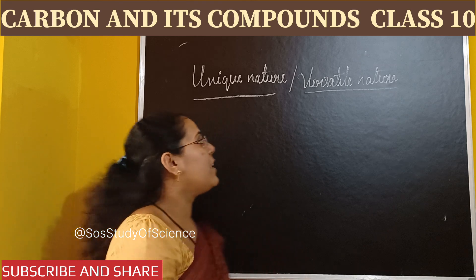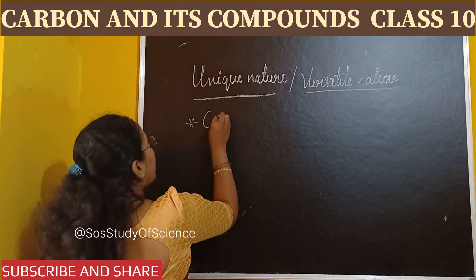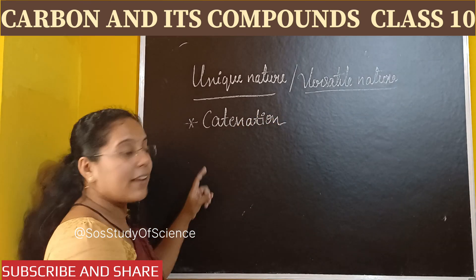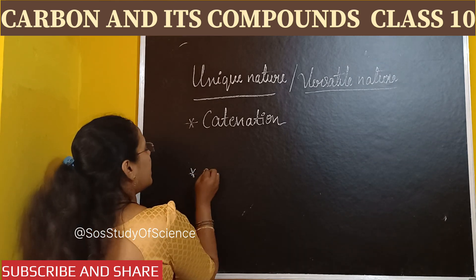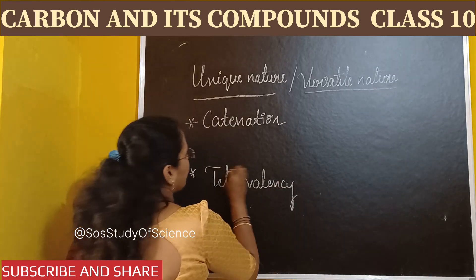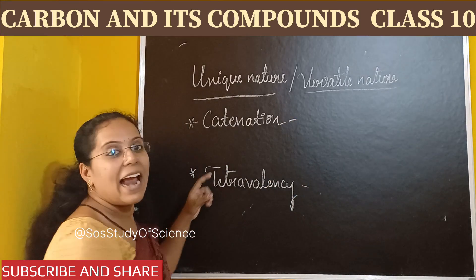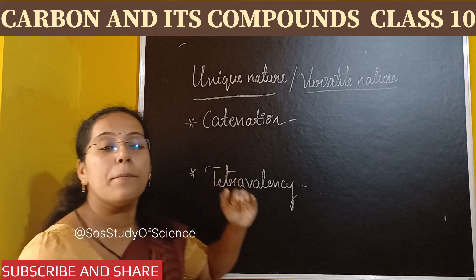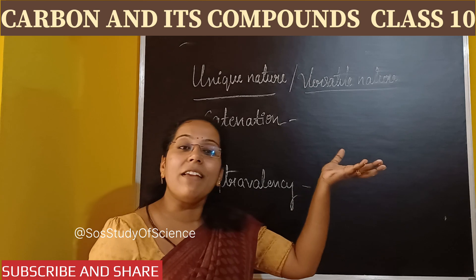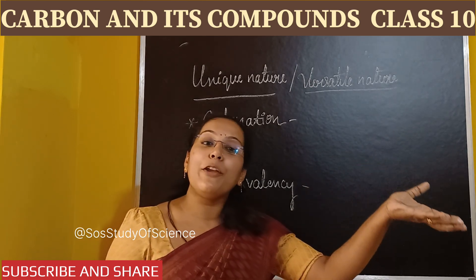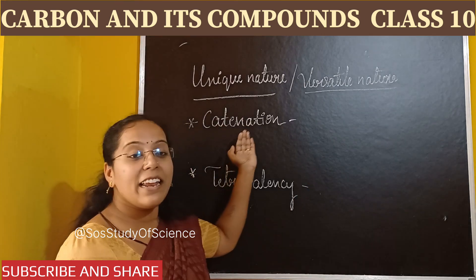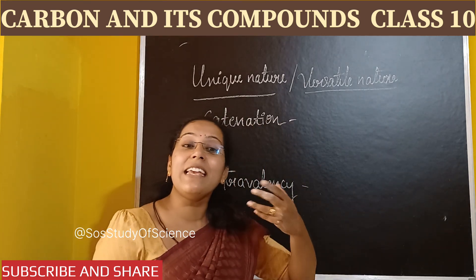The two important properties of carbon are: the first one is catenation — you may be hearing this word for the first time, it is a new word — and the second property is called tetravalency. So what do you mean by catenation? In simple terms, catenation is the unique property of carbon that we can describe as the self-linking ability of carbon.